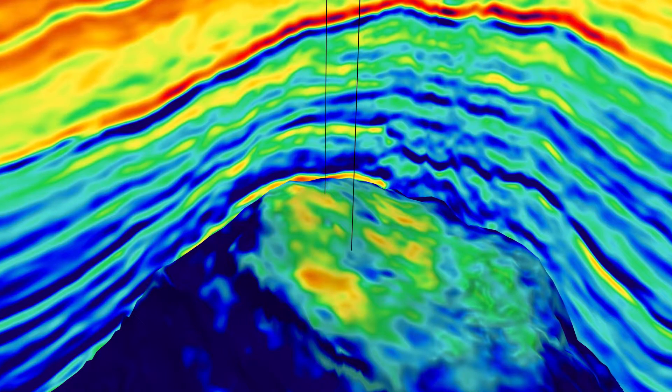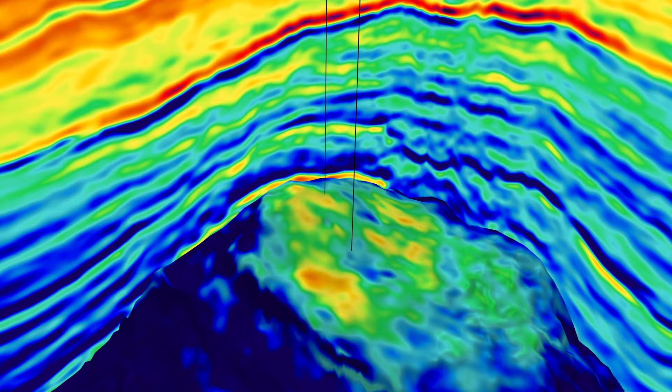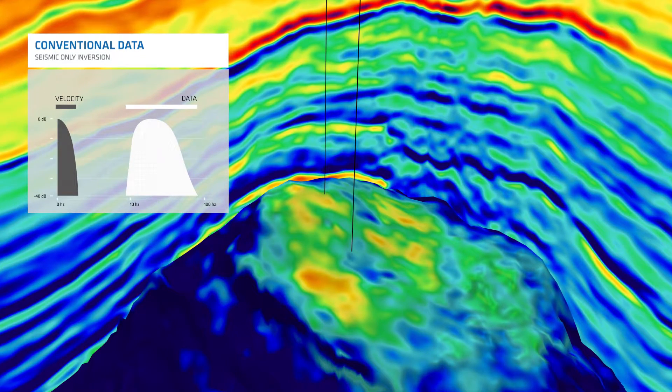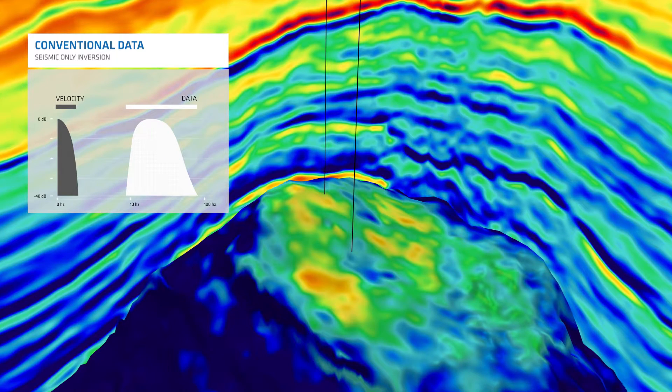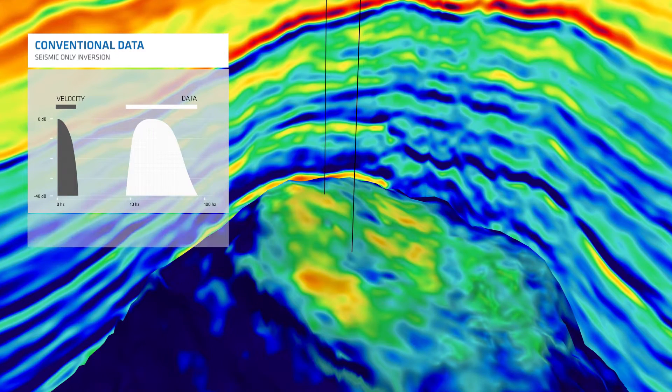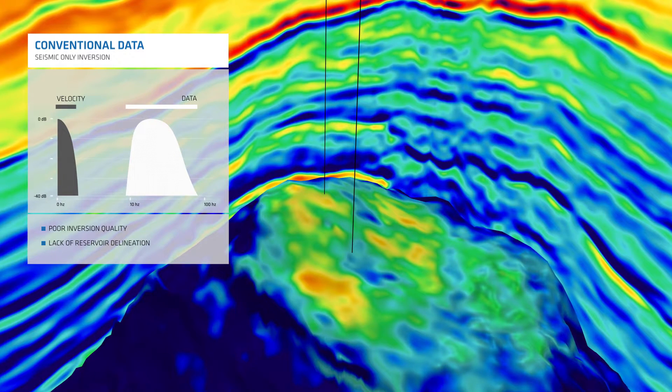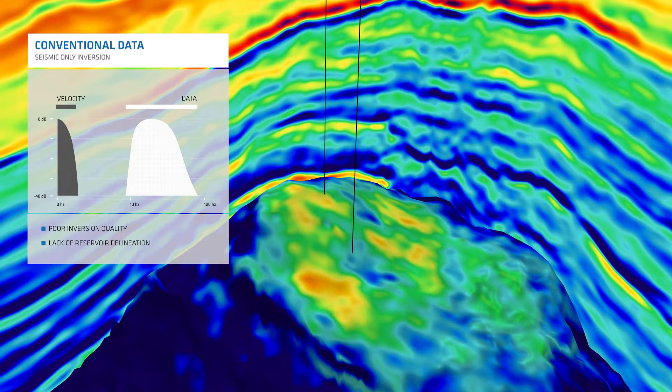The aerial distribution of acoustic P-impedance, computed from band-limited conventional data without any well input, is very patchy and unreliable. The correlation between the property distribution and the reservoir geometry of this structural high is also weak.